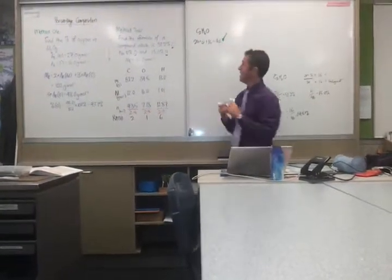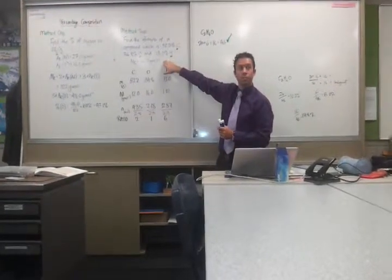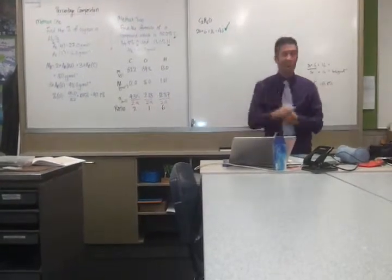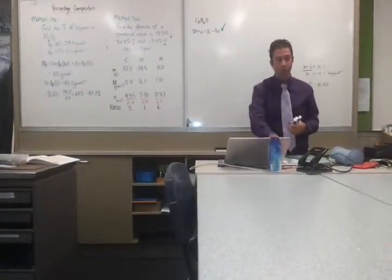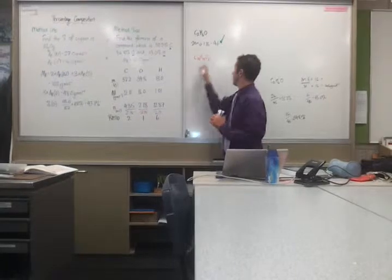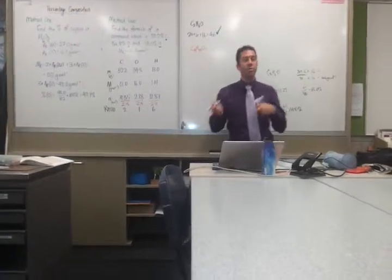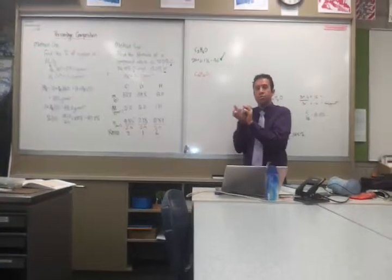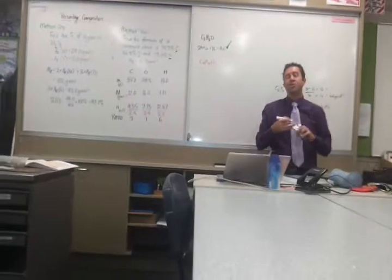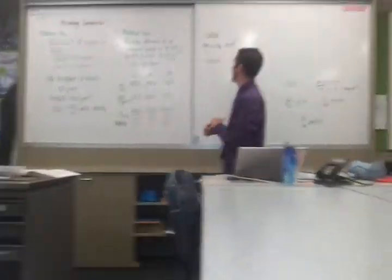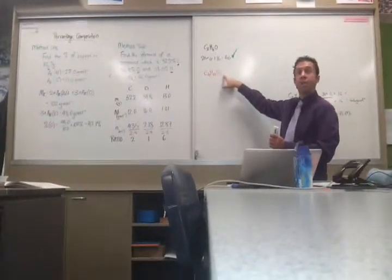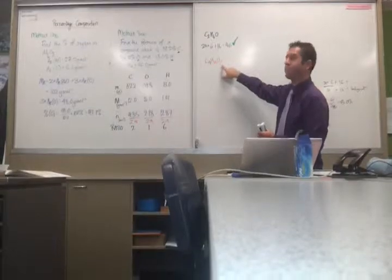However, let's say the molar mass was 92.0 instead. Then it would be C₄H₁₂O₂ — you actually double everything inside the formula. It doesn't mean there are two molecules of it; it means there's twice as much of each atom inside. So if it was 92, that would have been the formula — a completely different compound.